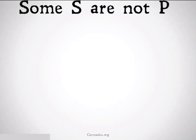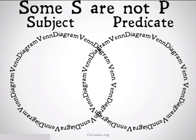The 'some are not' statement takes the form of 'some S are not P.' As usual, we're going to set up our Venn diagram with subject on the left, predicate on the right. For 'some S are not P,' we are going to put an X in the subject side, specifically in the subject side that does not overlap with the predicate side.